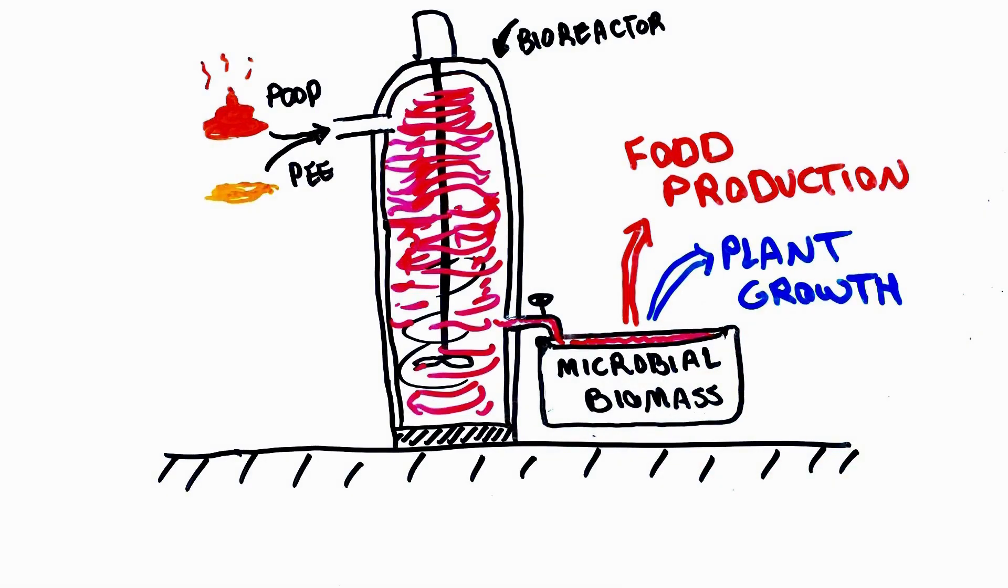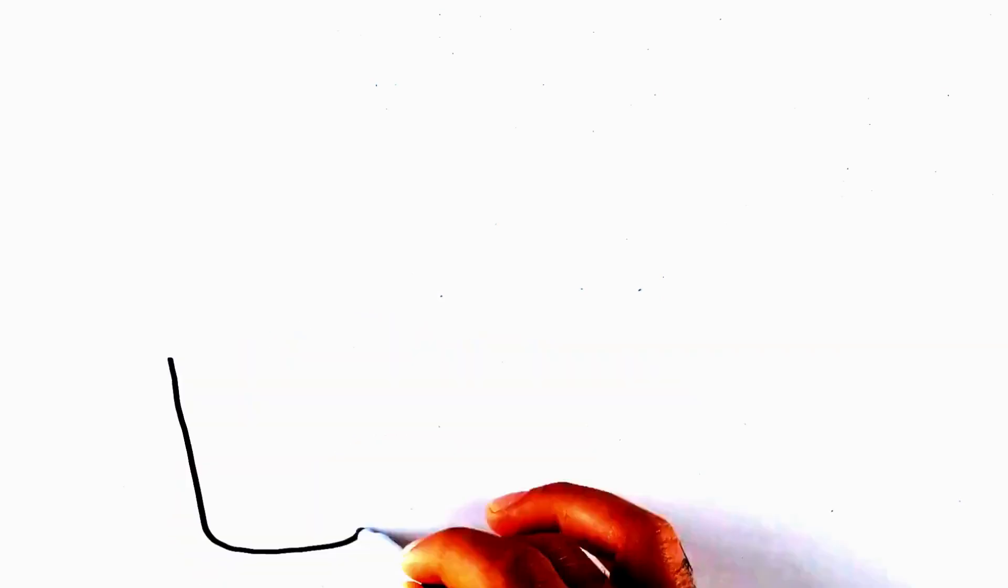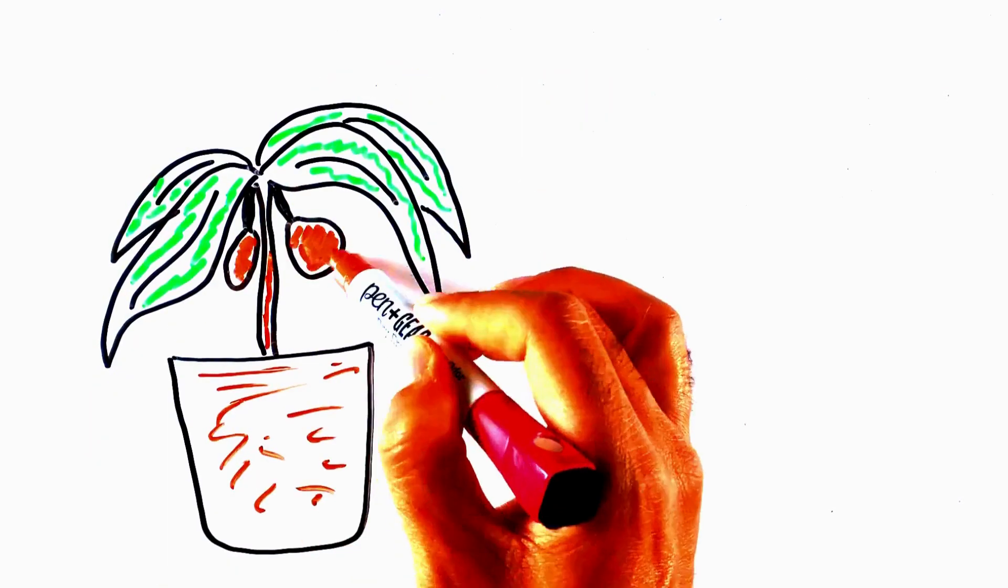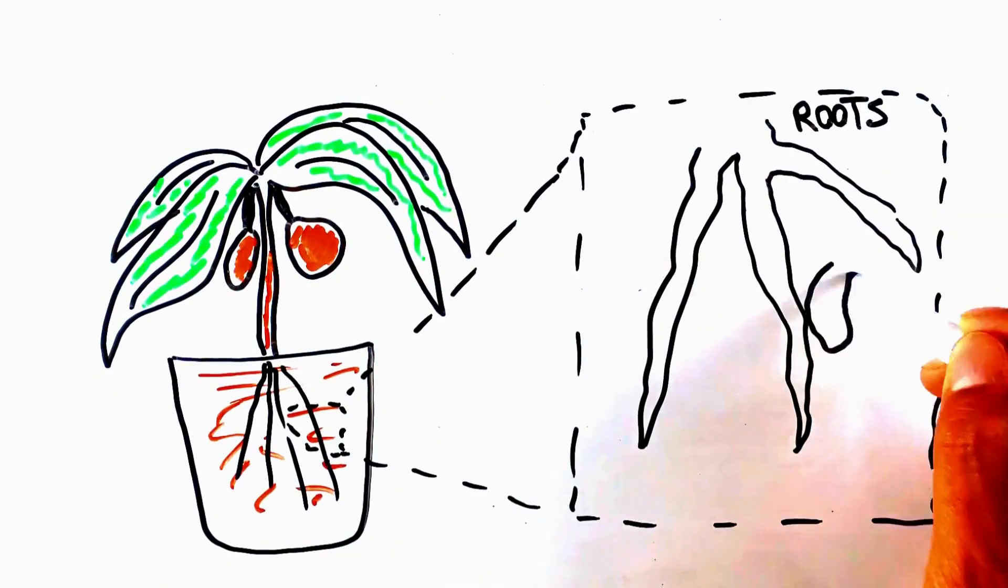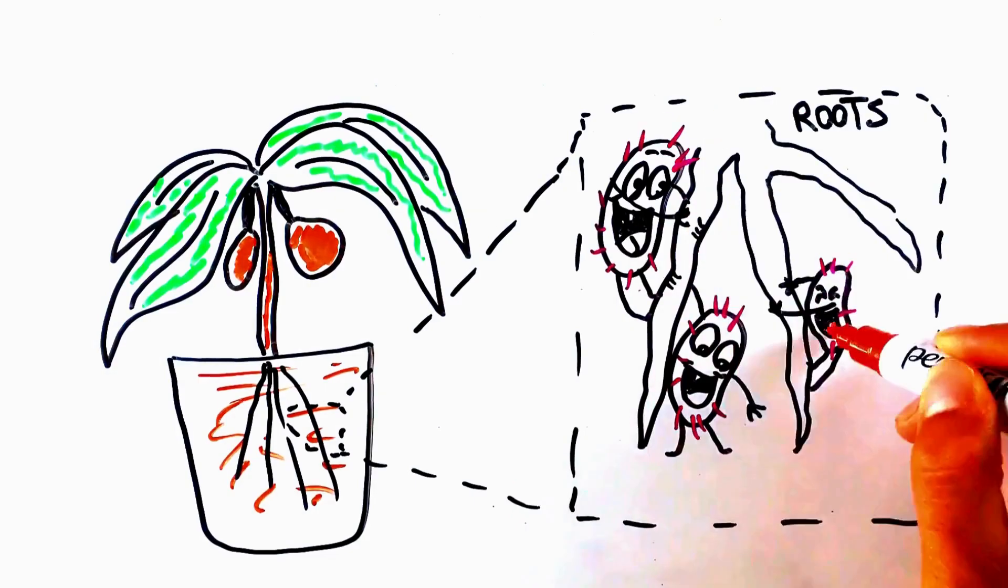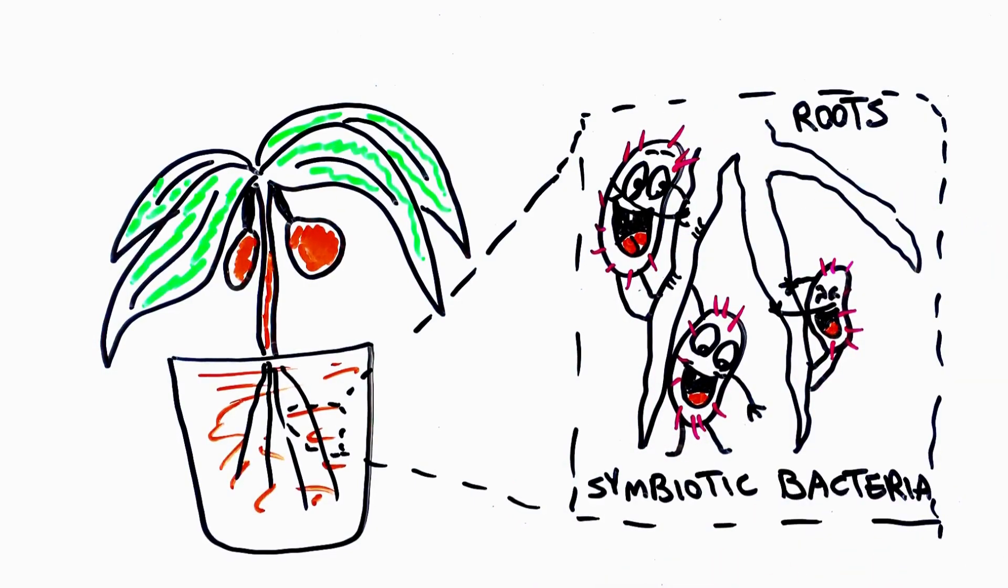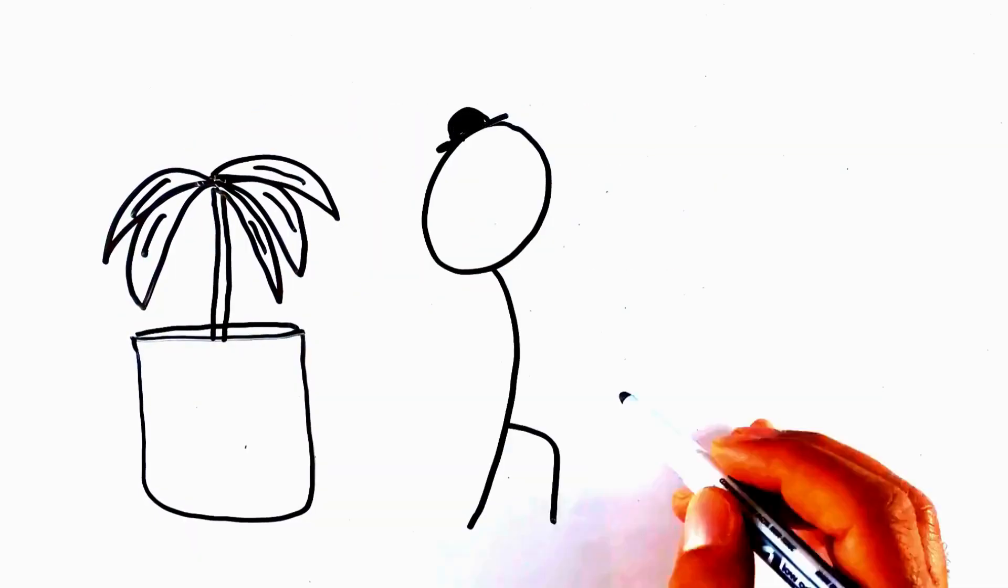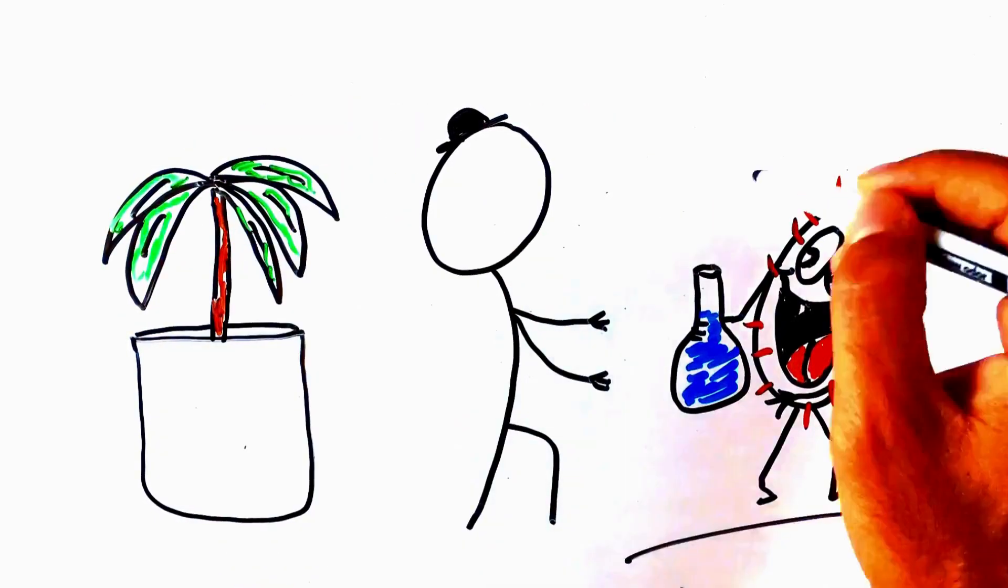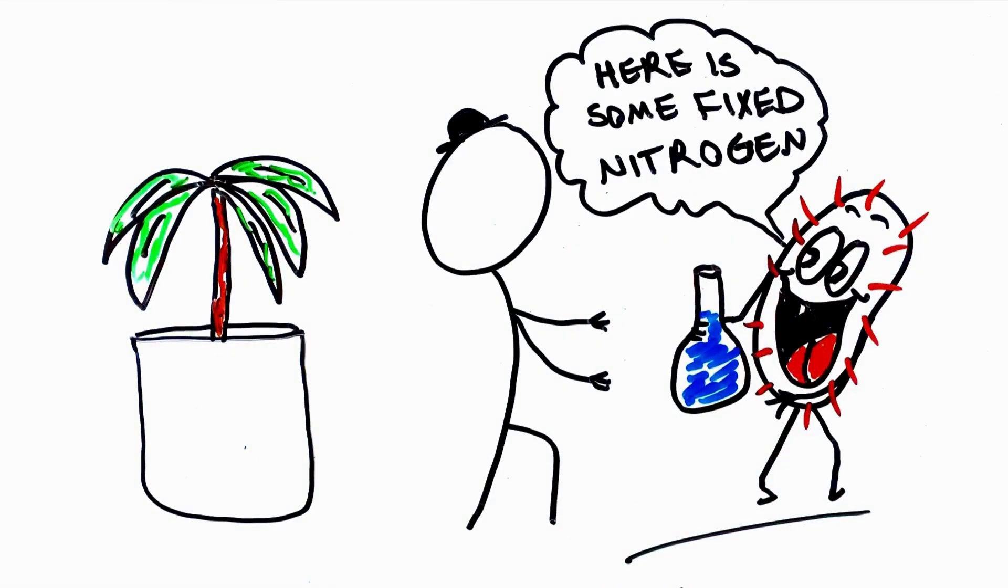These human wastes can be turned into fertilizers by microbes to support plant growth. To enhance plant growth, symbiotic bacteria will play an essential role in converting atmospheric or soil nutrients into bioavailable forms that can be readily absorbed by plant roots. For example, some bacteria can capture nitrogen from air through nitrogen fixation, supporting plant growth and food production.